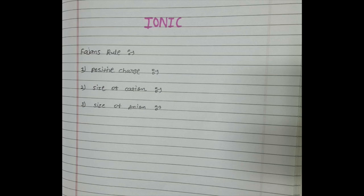Hello guys, welcome to week M1. Today we are going to discuss about which compound is most ionic and which compound is less ionic. We know about Fajans' rule. Fajans' rule says that no compound is 100% ionic or 100% covalent. That's why ionic or covalent are relative terms.